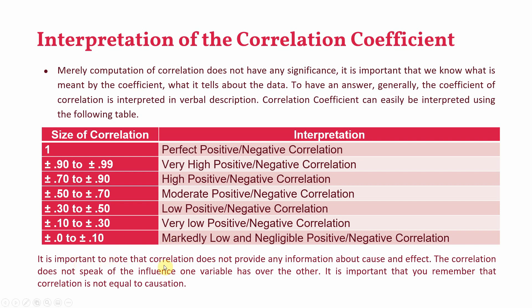It is important to note that correlation does not provide any information with regards to cause and effect. You cannot say that corporate social responsibility is leading to, affecting, or impacting reputation. Correlation does not speak of the influence of one variable on the other — it describes the relationship between variables, not causation.